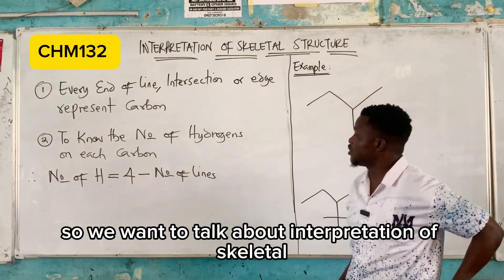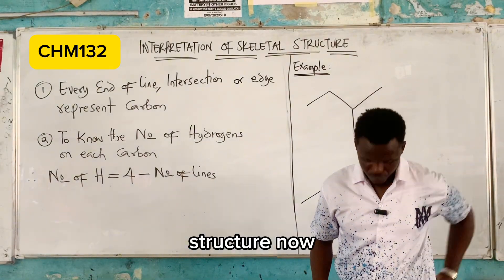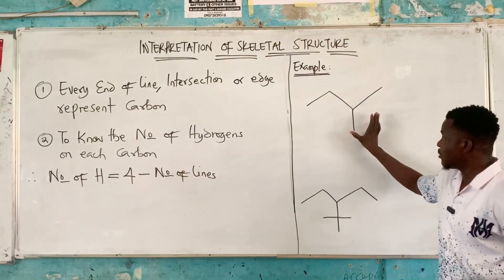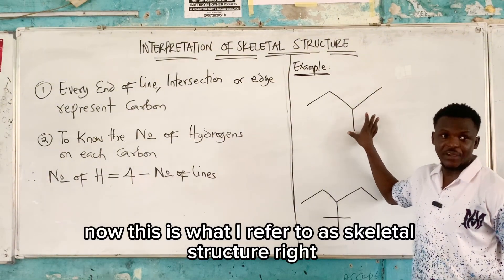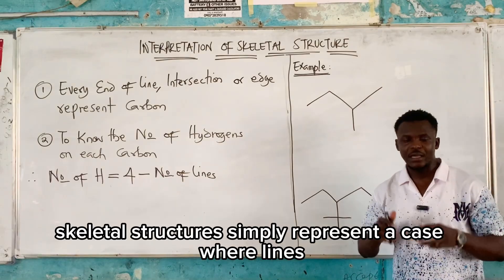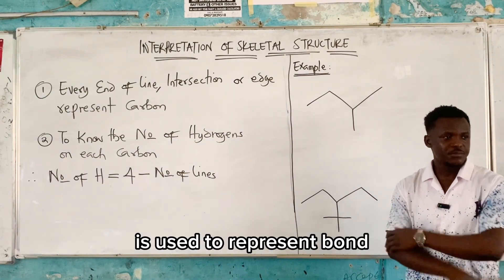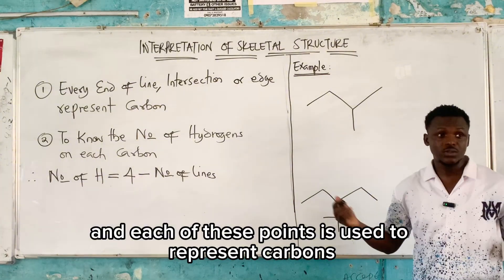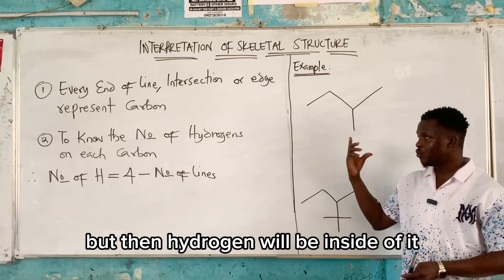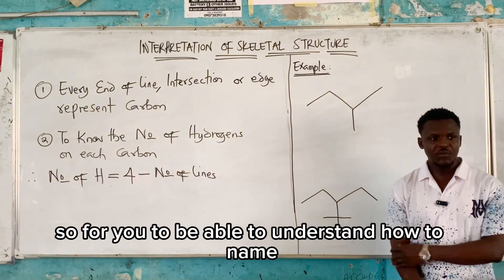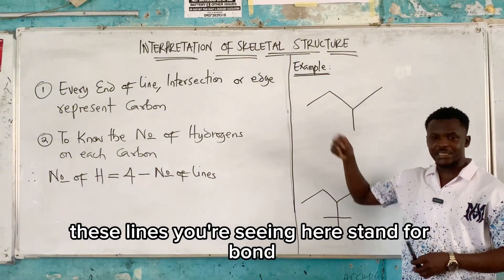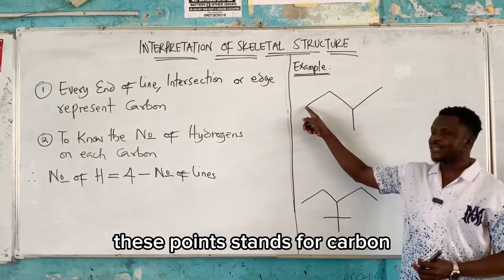We want to talk about interpretation of skeletal structure. Why is this topic important? It's because most of the structures you're going to be seeing will be represented like this. This is what I refer to as skeletal structure. Skeletal structure simply represents a case where lines are used to represent bonds, and each of these points is used to represent carbons.